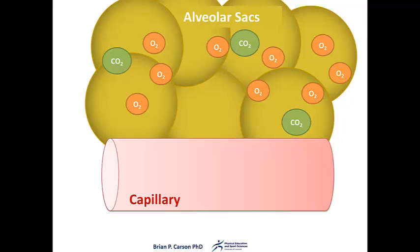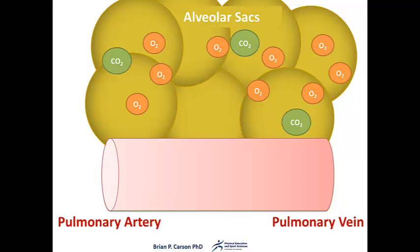The oxygenated blood passes through the pulmonary circulation from the pulmonary artery to the capillary beds and back to the left side of the heart via the pulmonary veins. This blood has a high partial pressure of carbon dioxide and low partial pressure of oxygen.